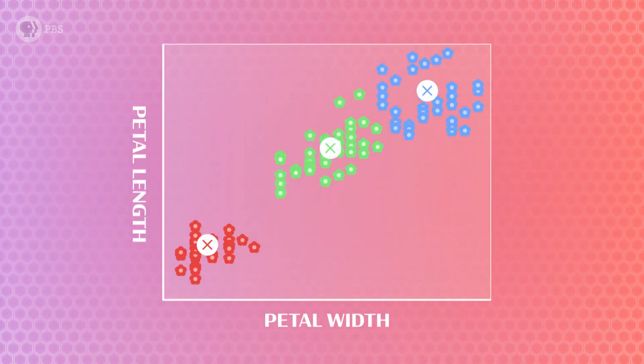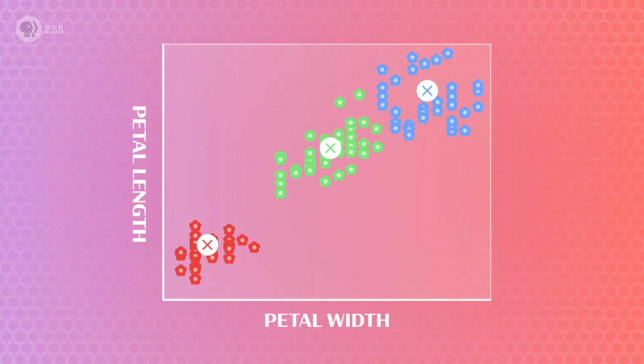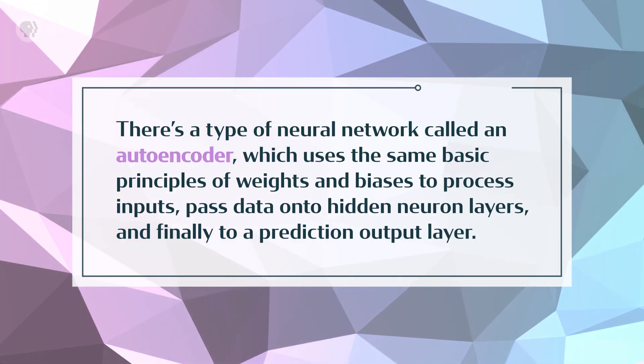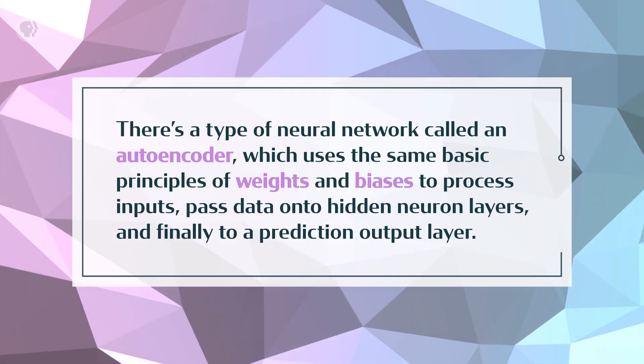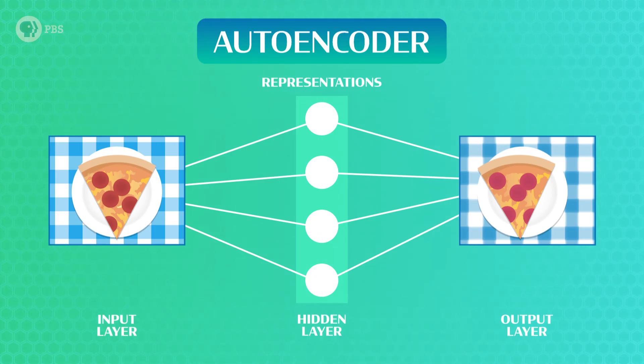Our k-means clustering algorithm from before predicted classes for flowers based on how close the data points were to the averages. For images, we will have learned image representations instead of averages. After that step, just like before, the AI will have to correct itself. Previously, we updated the k-clusters based on how well our predicted labels fit the data. But for images, we'd have to update the model's internal representations based on its reconstructions. There are different ways to use unsupervised learning in combination with representation learning so that an AI can compare images. For example, there's a type of neural network called an autoencoder, which uses the same basic principles of weights and biases to process inputs, pass data onto the hidden layers, and finally to a prediction output layer. If John Greenbot was programmed with an autoencoder, the input would be an image, the hidden layers would contain representations, and the output would be a full reconstruction of the original image, which gets more accurate the more we train this AI.